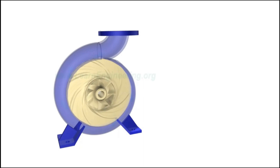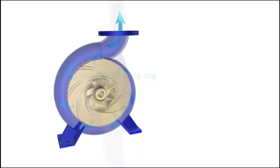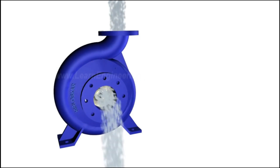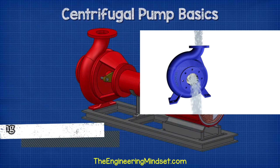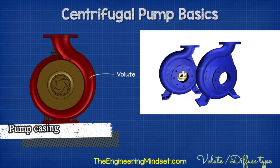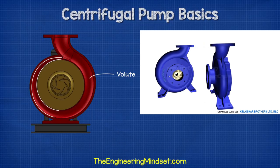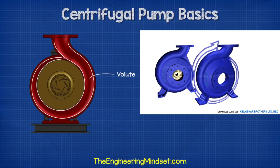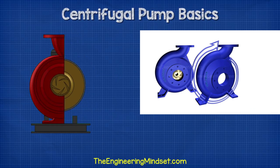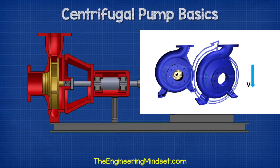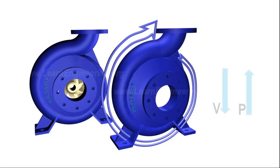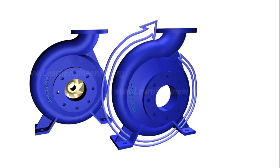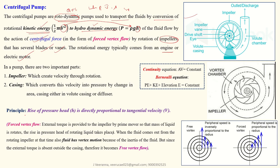The impeller sits inside a casing, so water moving outward is collected inside it and directed toward the discharge nozzle. The casing has increasing area along the flow direction, which accommodates the added water stream and reduces exit flow velocity. This reduction in velocity results in an increase in static pressure, which is required to overcome the resistance of the pumping system.